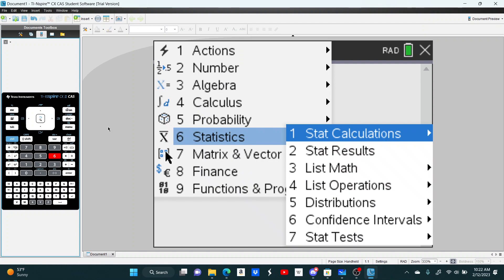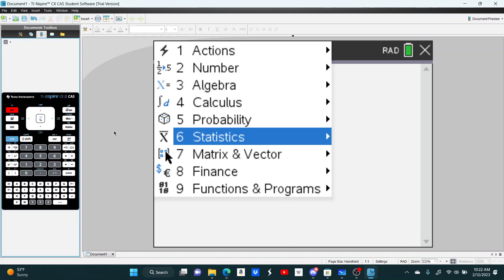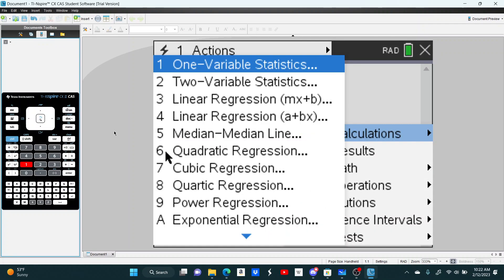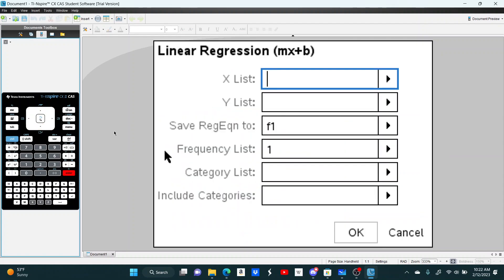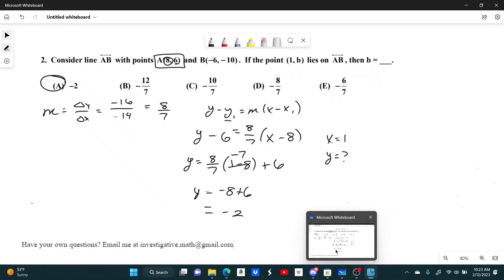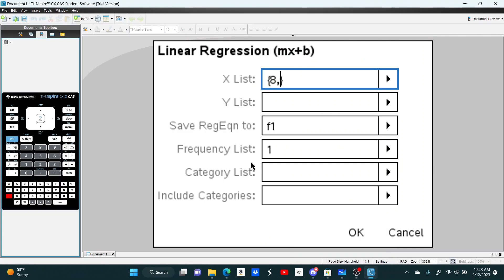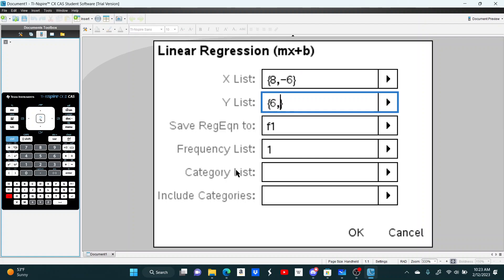As many of you know, there is a linear regression function on your calculator. You go to statistics, then stat calculations, and then you can go to either 3 or 4—it doesn't matter which one. I'm going to go to 3. In the first part, you put your xlist, and you have to put it in braces, which you can do by using control and then the right parenthesis. My two x-coordinates are 8 and negative 6. Then inputting my y-coordinates, 6 and negative 10. Always make sure that these line up.